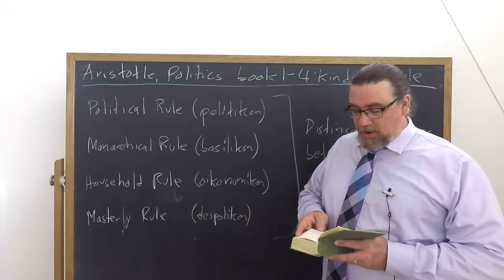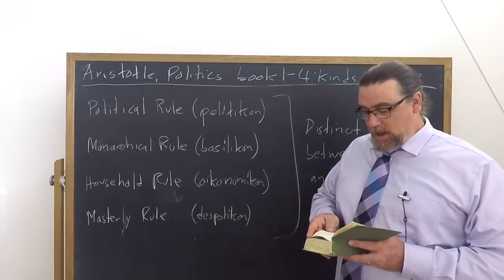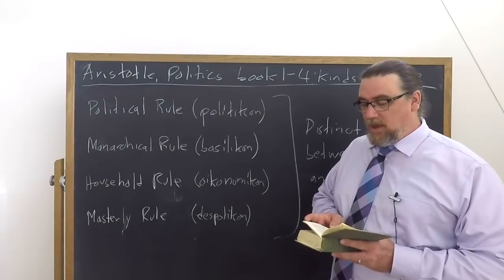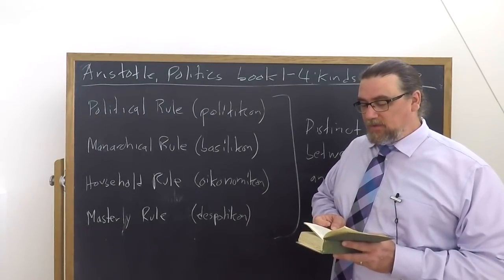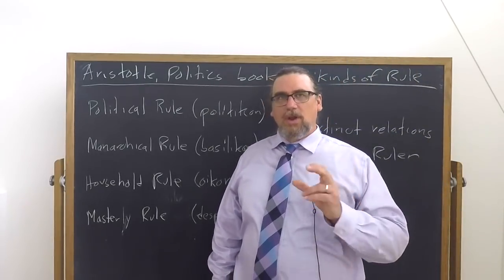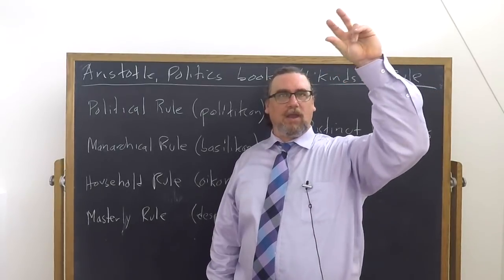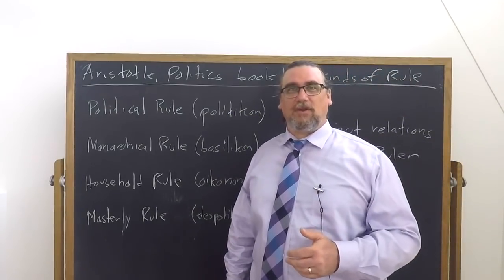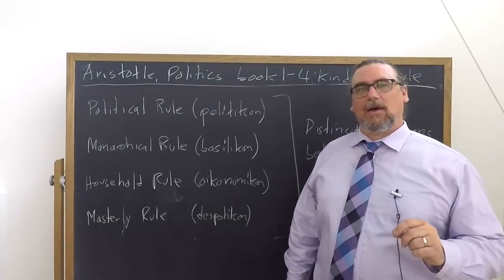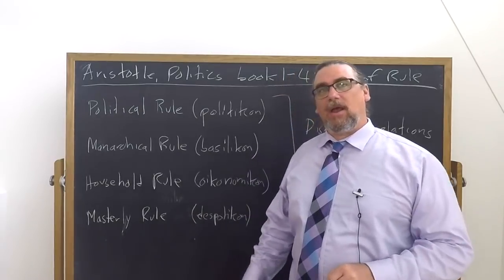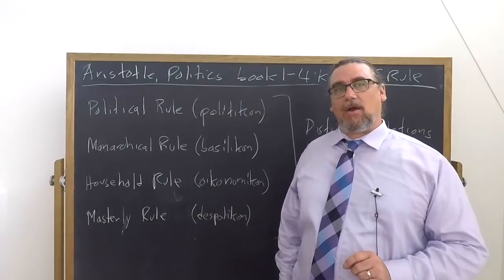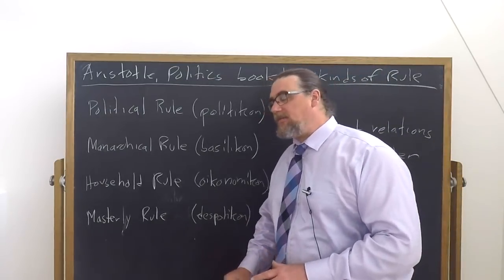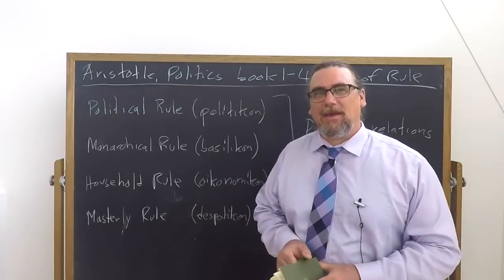So he says that as to the statesman or the political ruler and the royal ruler, they think that one who governs as a sole head is royal and one who, while the government follows the principles of the science of royalty, takes turns to govern and be governed is a statesman. And then he says that's not actually true. You could, in fact, have a monarch, a single ruler, but it could be political rule. Think about the office of the president here in the United States as the head of state. But as the head of state, they are something like the Aristotelian monarch. But they are elected. It is political rule.